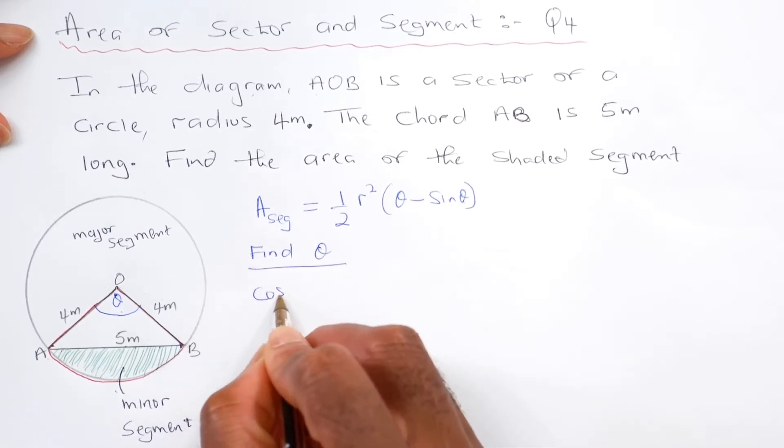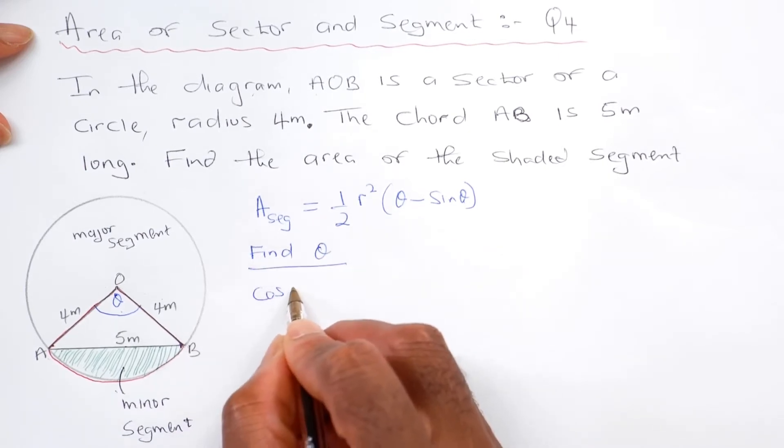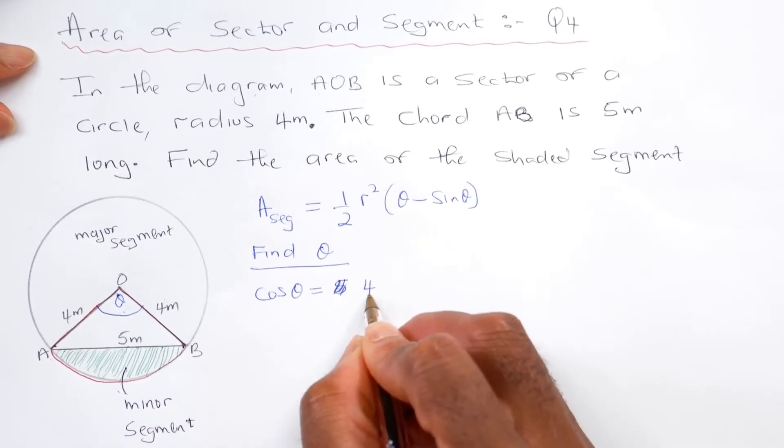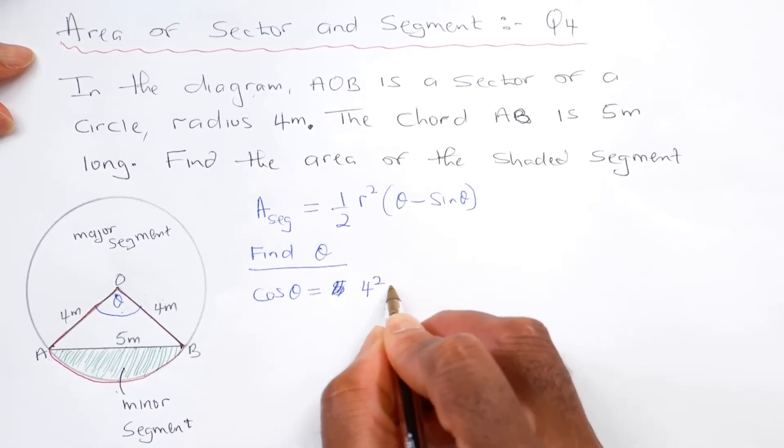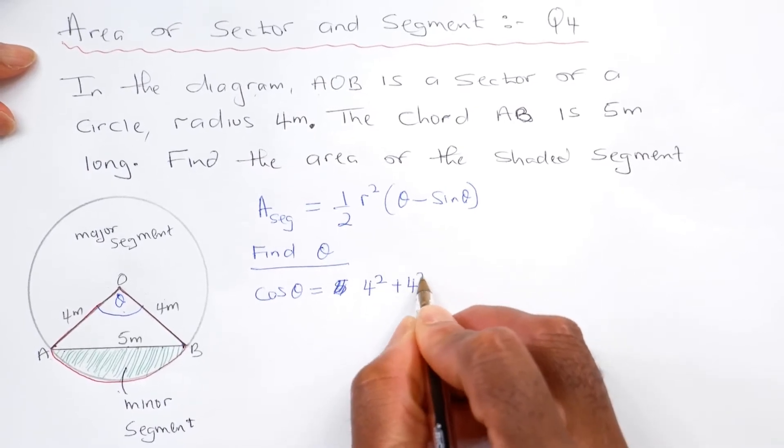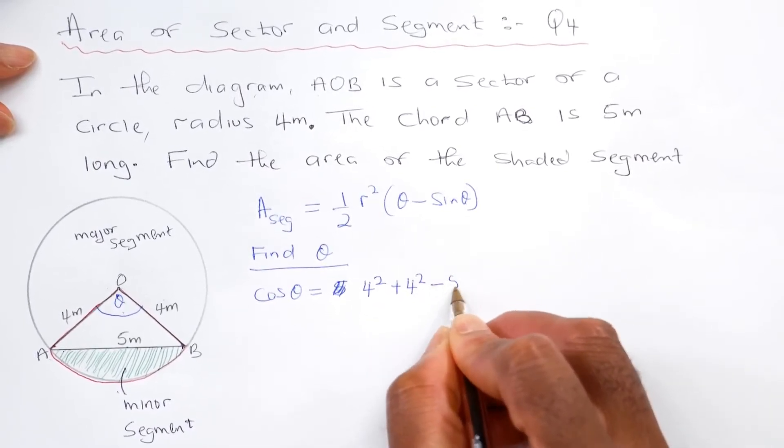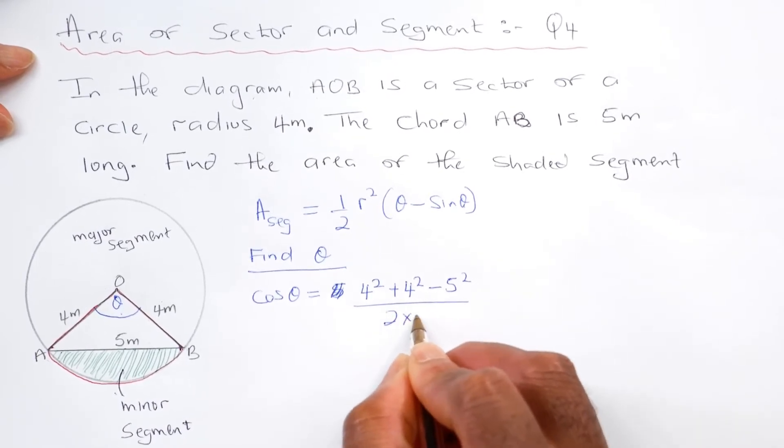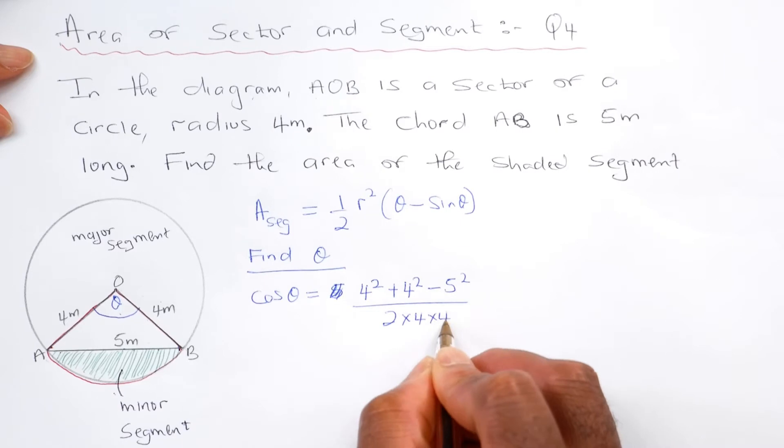To find theta, cos of the angle theta will be equal to 4 squared plus 4 squared minus 5 squared over 2 times 4 times 4.